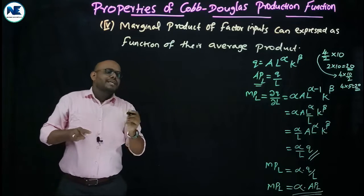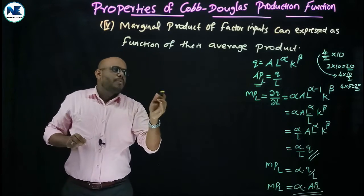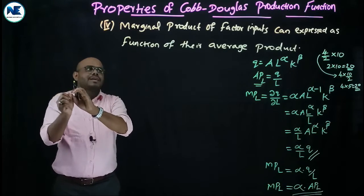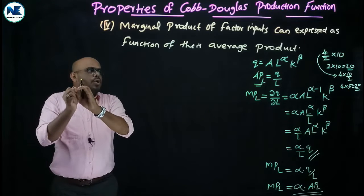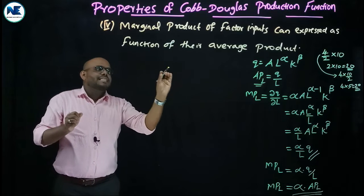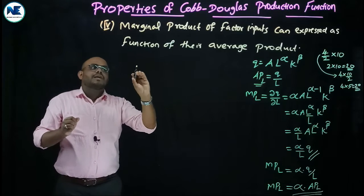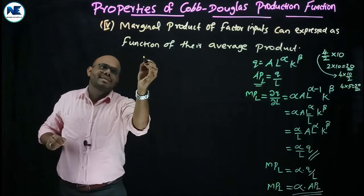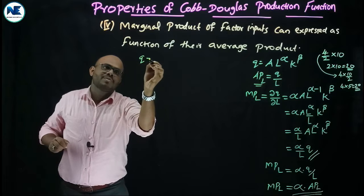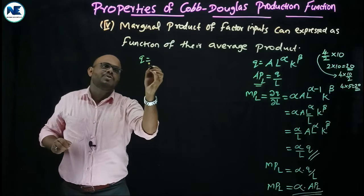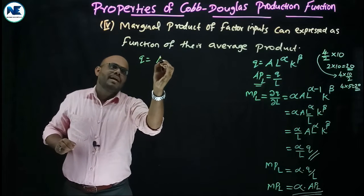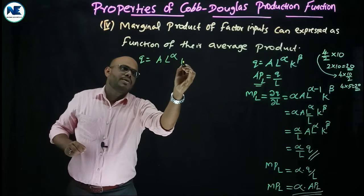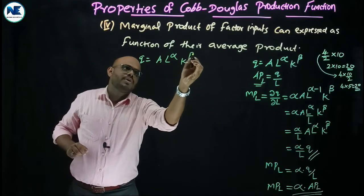Similarly, the marginal product of capital can also be expressed as a function of its average product. Consider the Cobb-Douglas production function Q = A · L^α · K^β. We take the marginal product of capital, that is ∂Q/∂K.